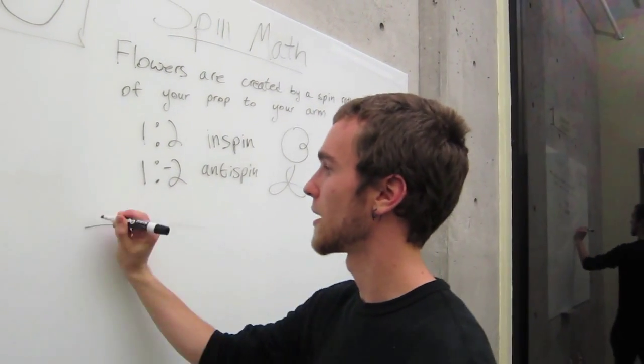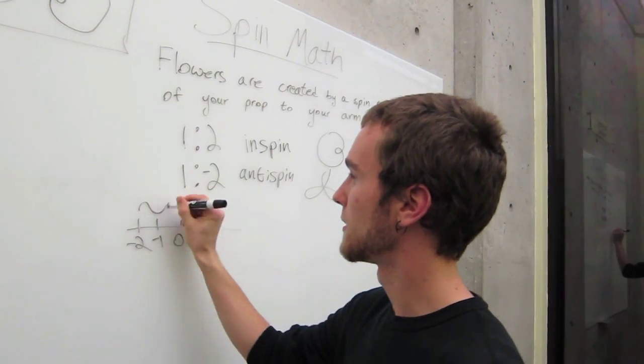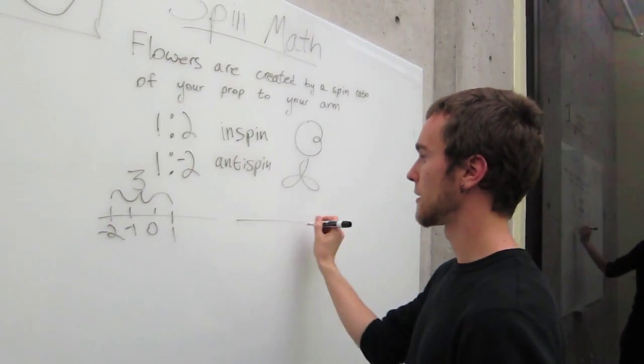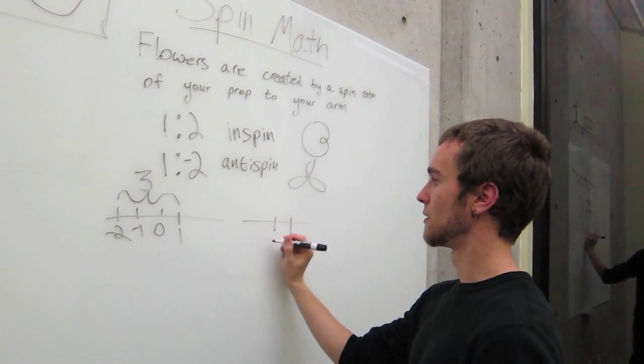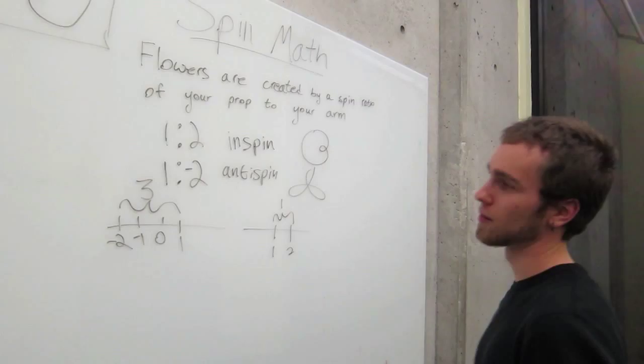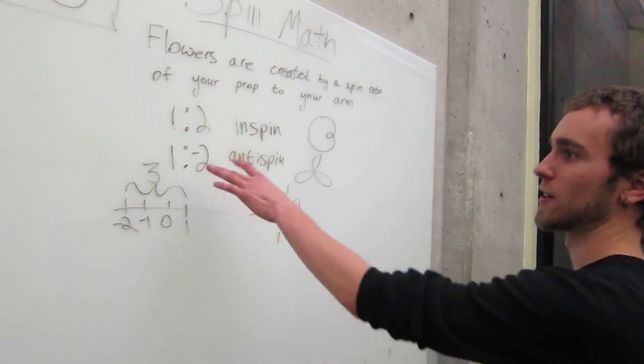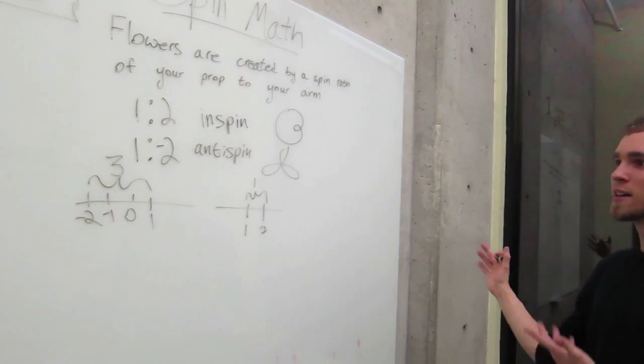If you were to look at them on a number line, if you have minus two over here, minus one, zero, one, that distance is three. Whereas in-spin it's just one, or zero. One and two, that distance is one. So that gives you an idea of how one going in the opposite direction of the other actually adds a circle, and one going in the same direction seems to take away a circle.